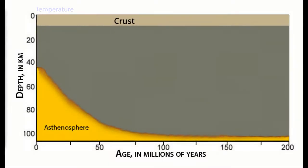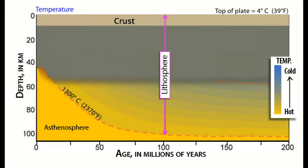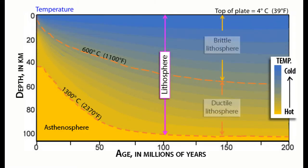Mathematical modeling of this cooling process illustrates the ocean plate becoming cooler and thicker with age. The temperature at the bottom of the plate is about 1,300 degrees centigrade.